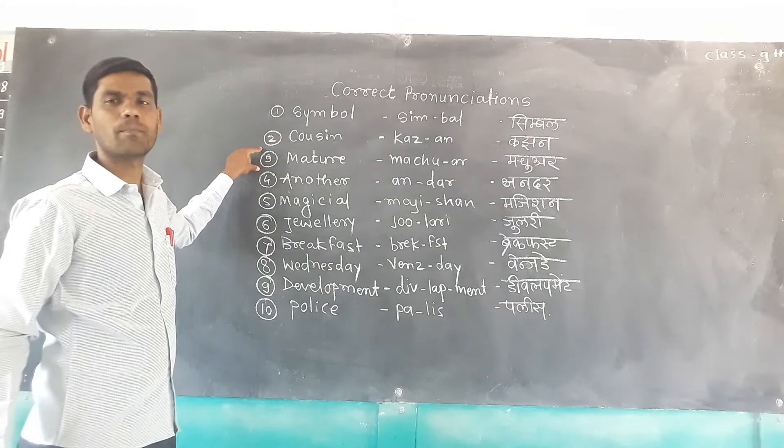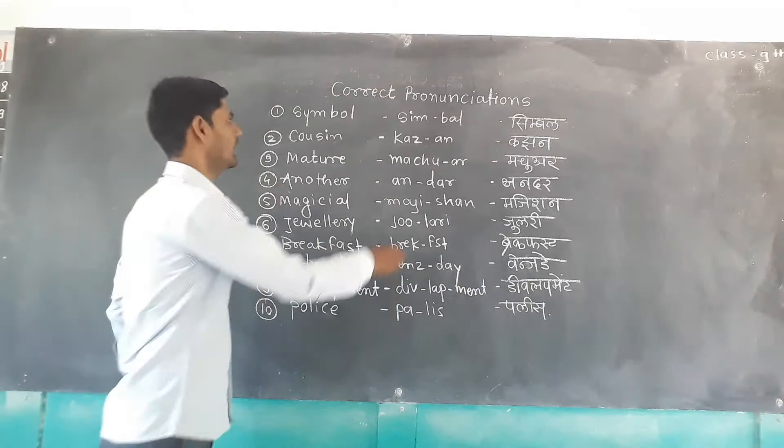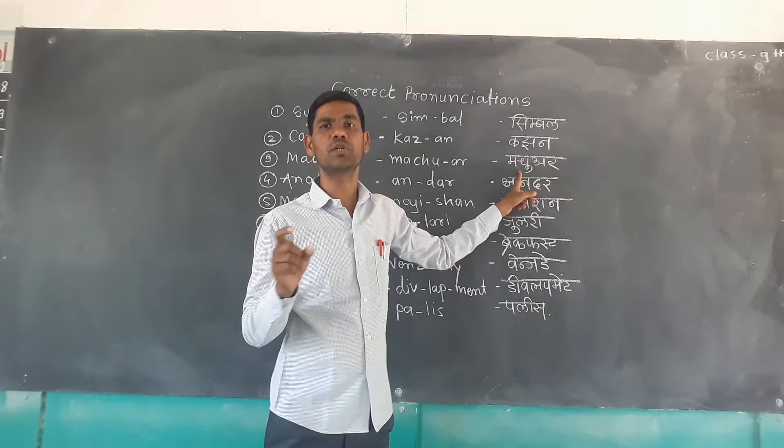Word number three — we say 'mature,' but this is not the correct pronunciation. The correct pronunciation is 'mature.' The correct pronunciation is 'mature.'